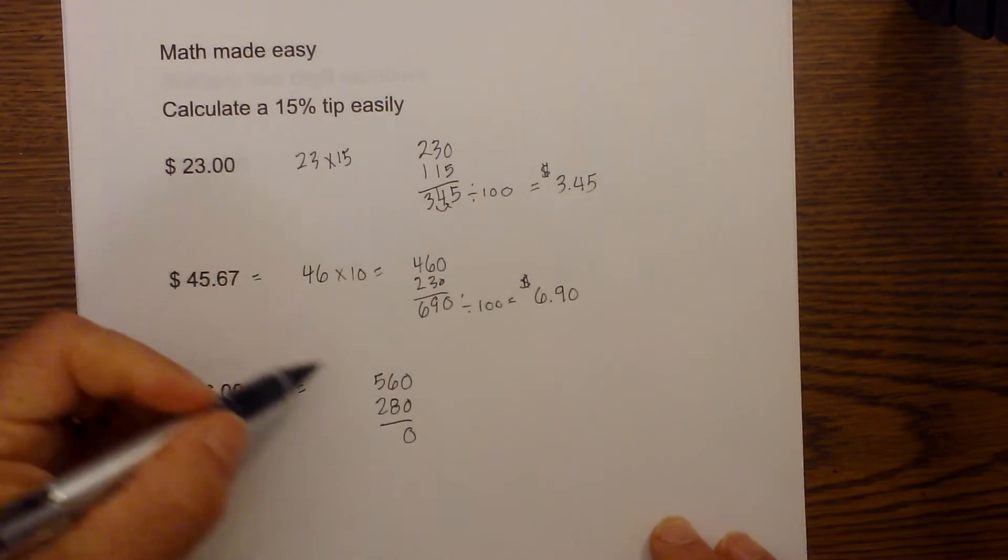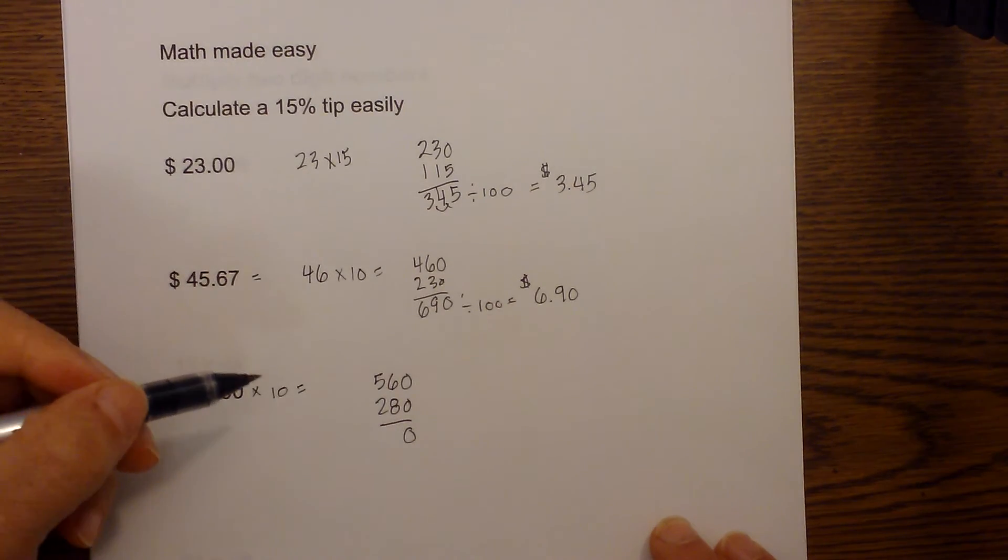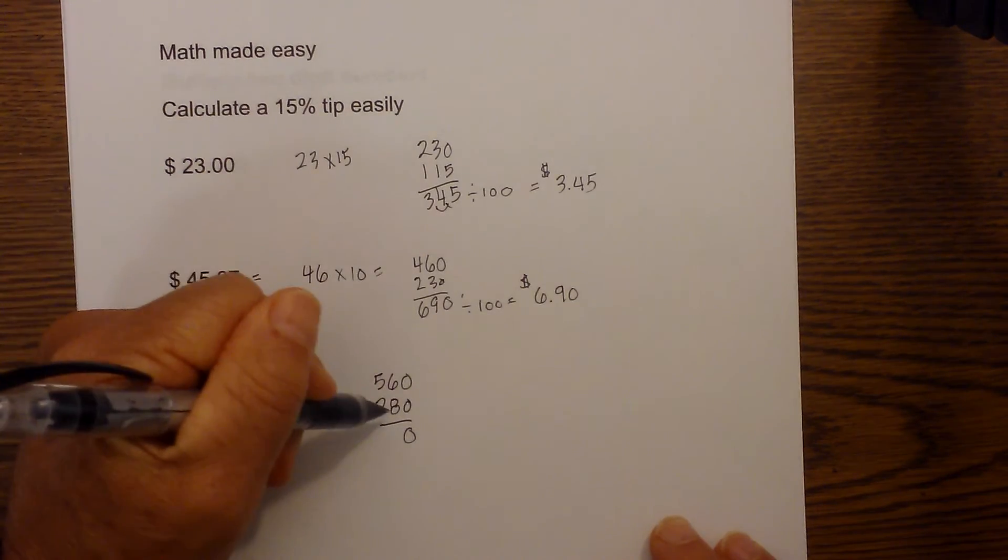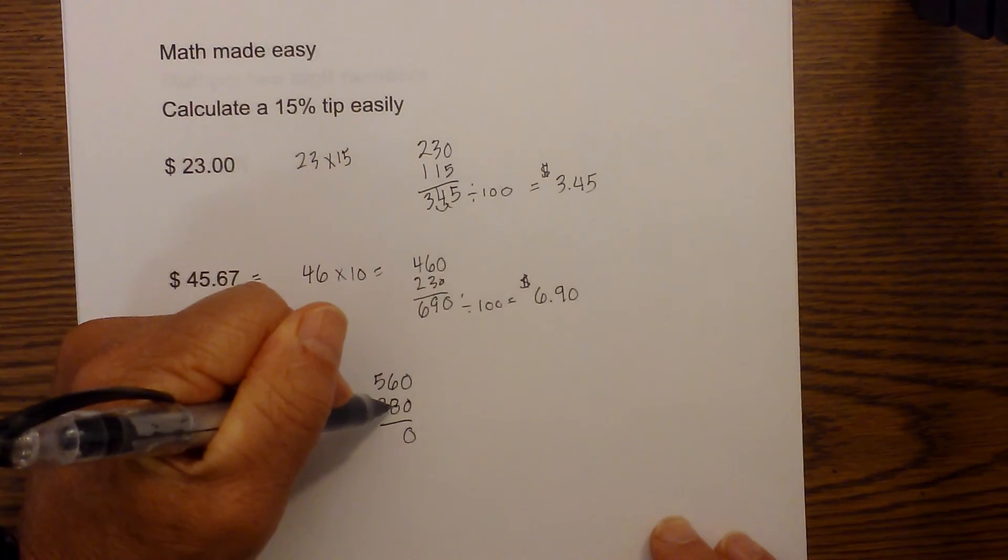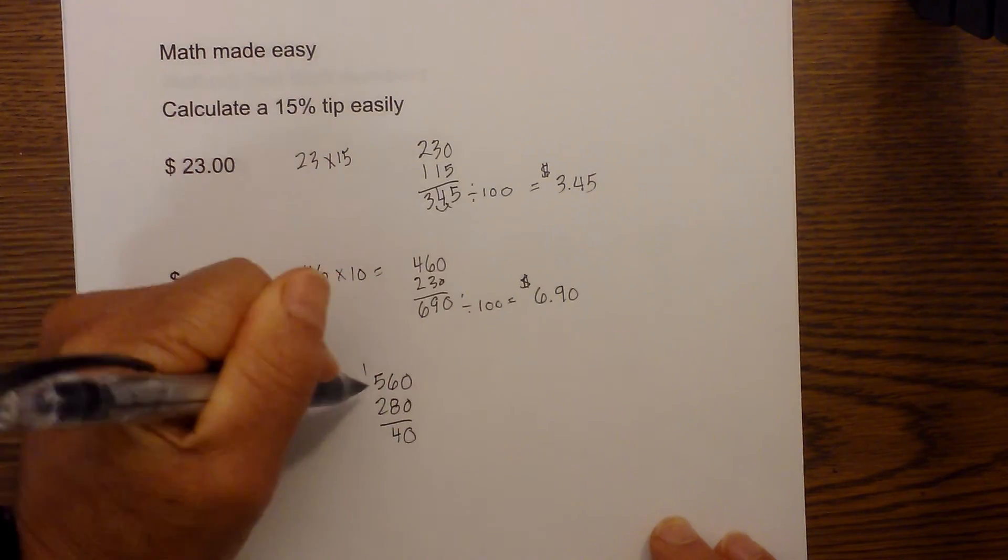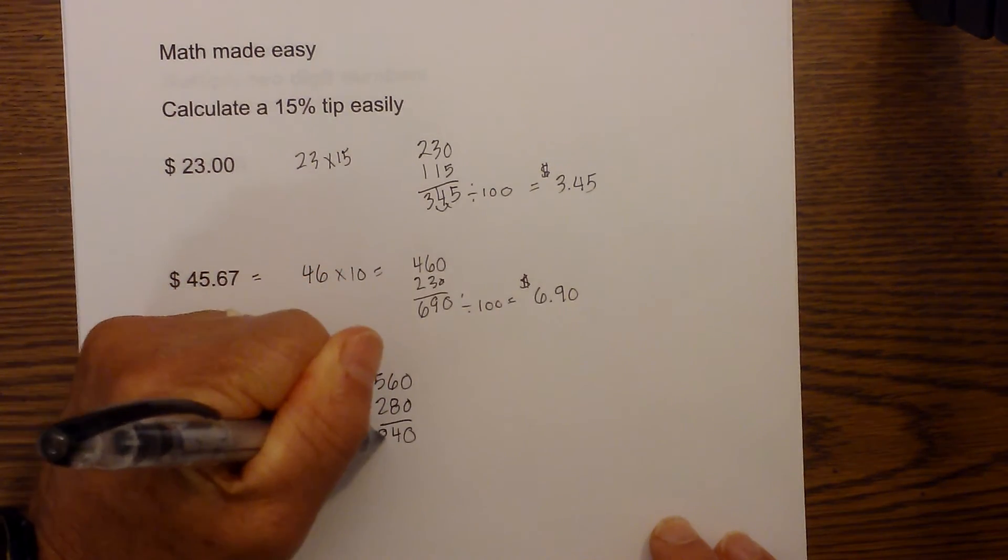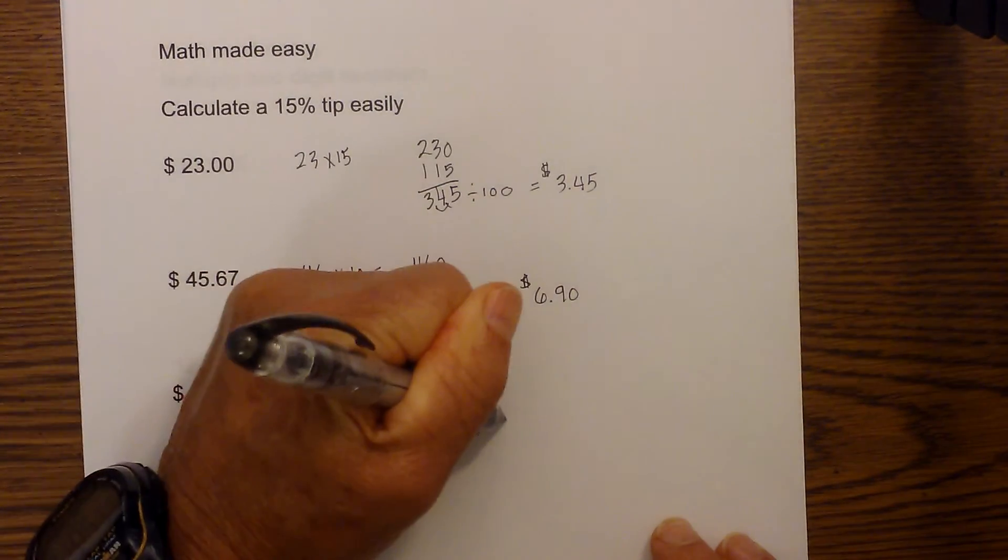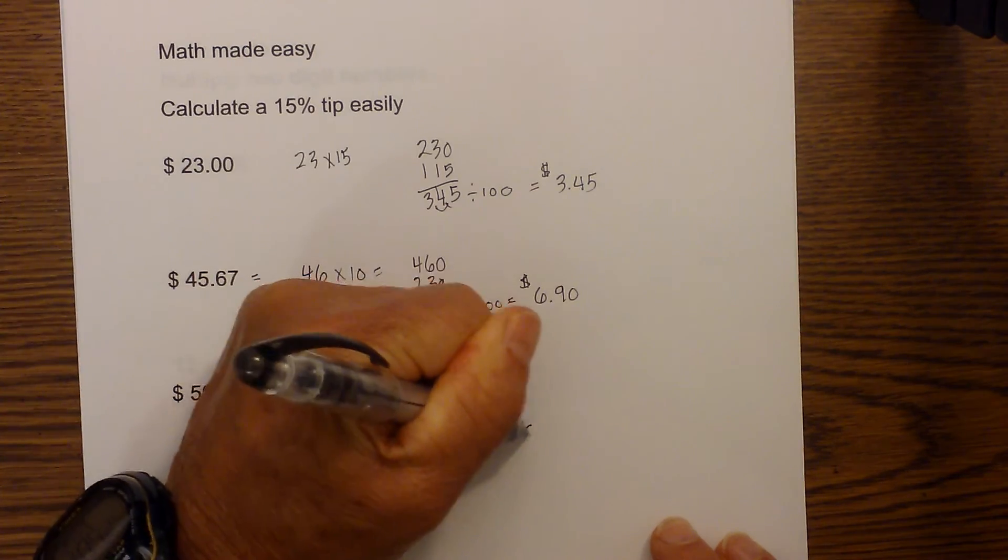The nice thing about this is you are dealing with either dividing something by 2 or just simple arithmetic. And then 8 plus 6 is 14, and then we will add 1 over here so it is 5, 6, 7. So we have 840 divided by 100. So your tip is going to be $8.40.